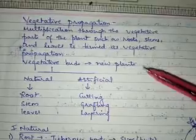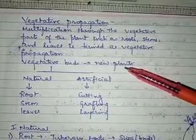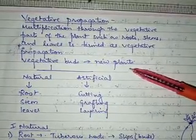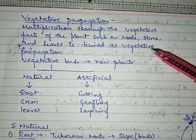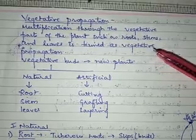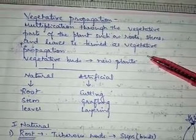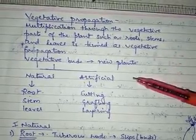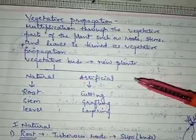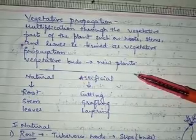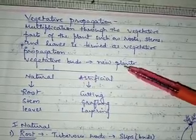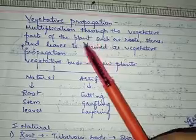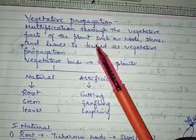Once the plant is produced, it will be removed from the parent plant and then planted somewhere else so that it grows independently. Examples of plants like rose and strawberry are multiplied with the help of the vegetative propagation method.